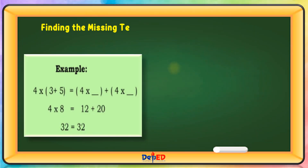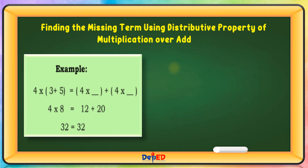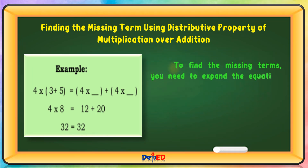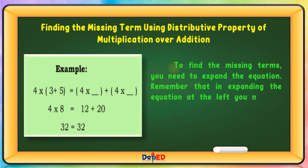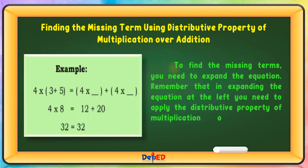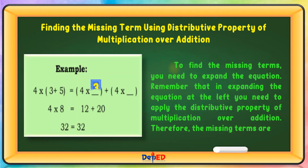Finding the missing terms using the distributive property of multiplication over addition. To find the missing terms, you need to expand the equation. Remember that in expanding the equation on the left, you need to apply the distributive property of multiplication over addition. Therefore, the missing terms are 3 and 5.